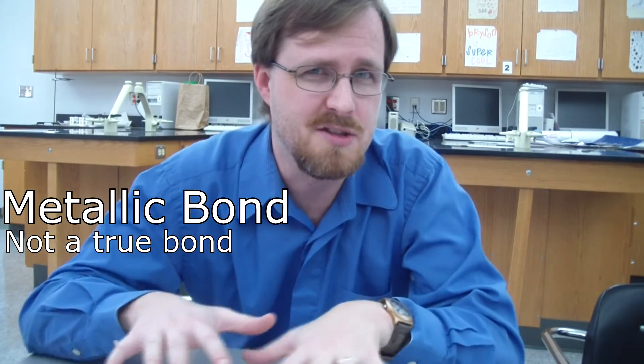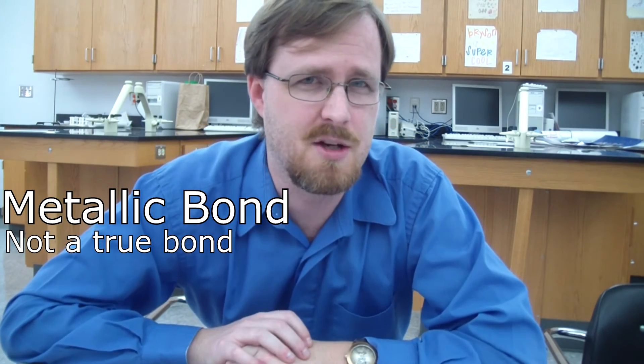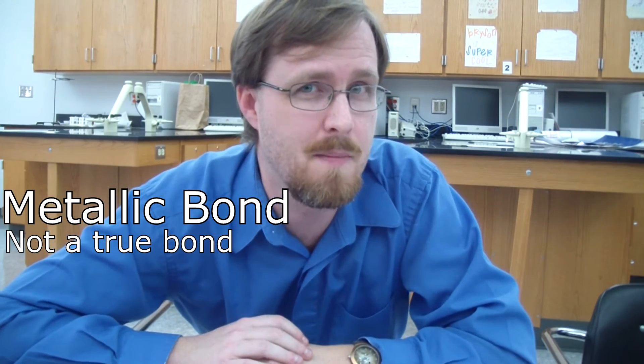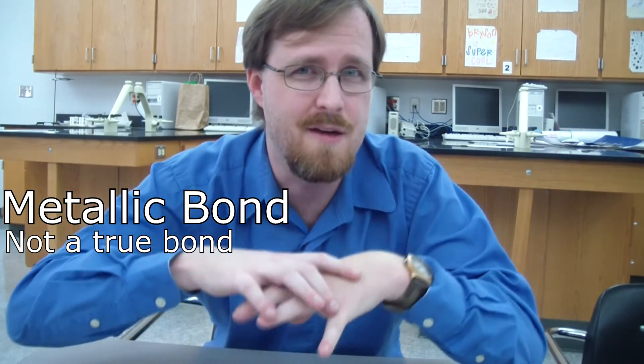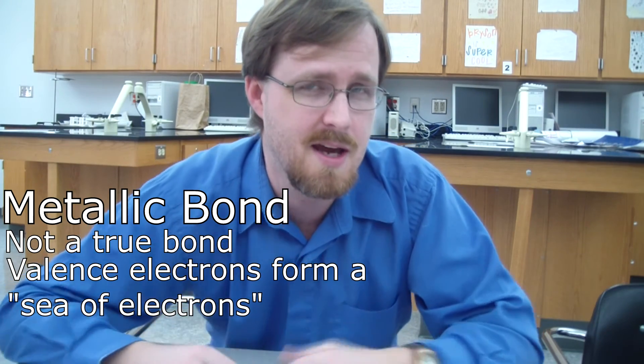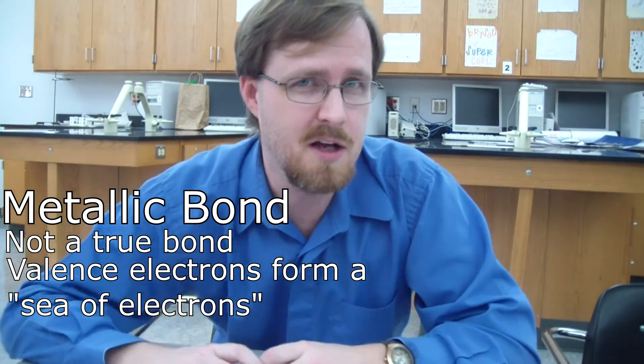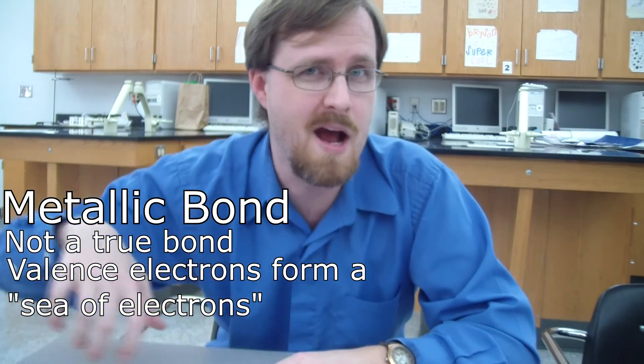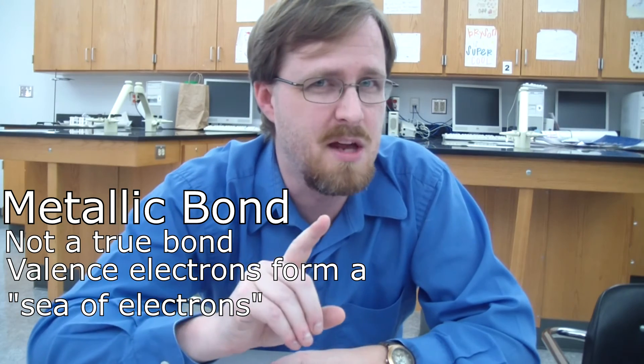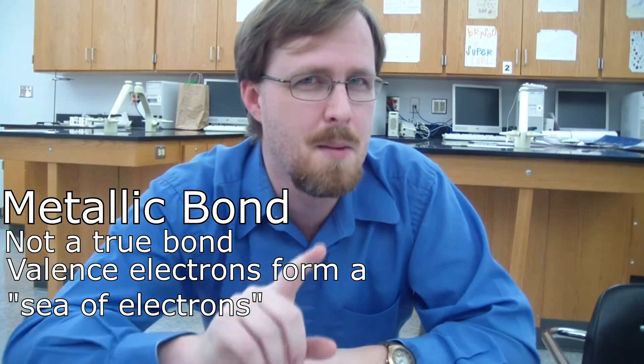You see, what happens is when all the metals get together, their valence electrons will detach themselves, if you will, from their nuclei and they form what we call a sea of electrons. And as this sea of electrons begins flowing around all of the nuclei, that's what gives metals their specific properties.